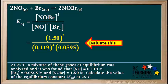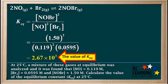Now we can determine the value for K_eq by evaluating this expression. 1.50 squared divided by the product of 0.119 squared times 0.0595 is equal to 2.67 times 10 to the third.